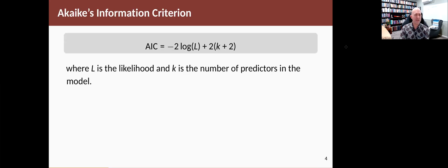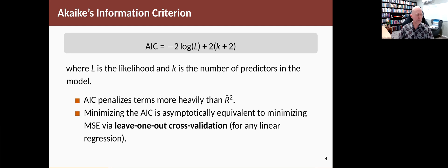In the 1970s, the Japanese statistician Akaike came up with this way of doing it, which is now called the AIC, where it's minus twice the log likelihood of the model, plus two times K plus two, where K is the number of predictors. And this penalizes terms more heavily than adjusted R².